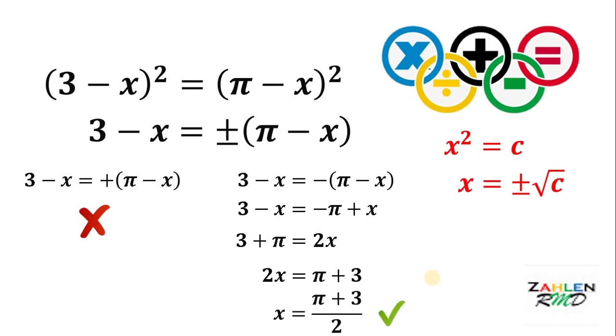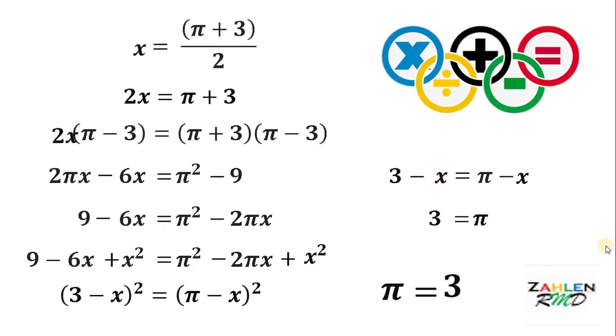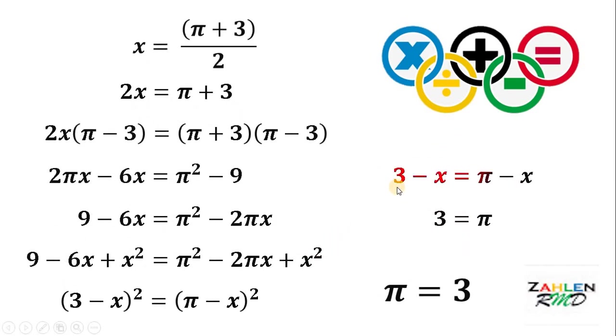Therefore, we can say that the mistake in our proof is this line — where we took only the positive square root. And as always, we're done.